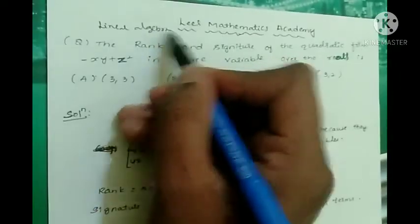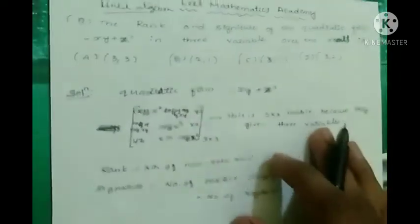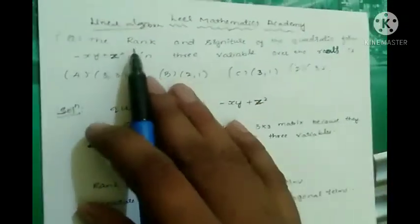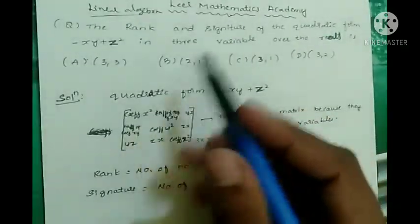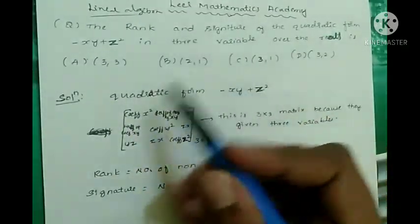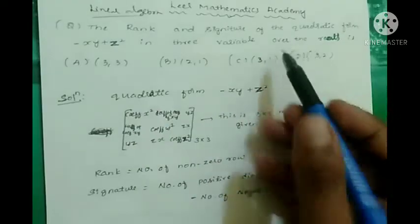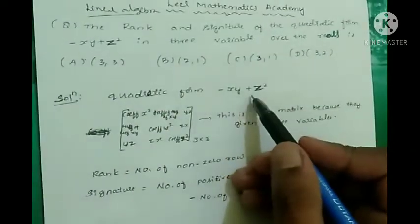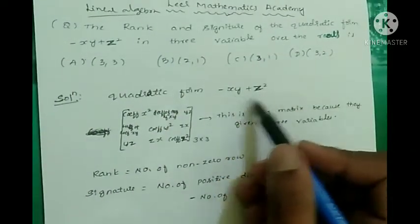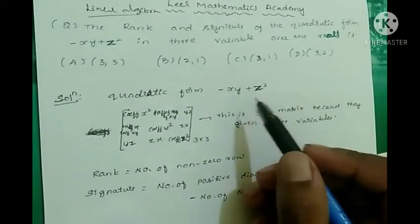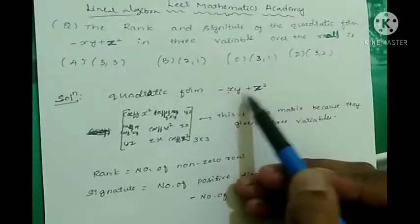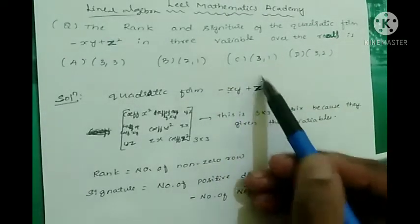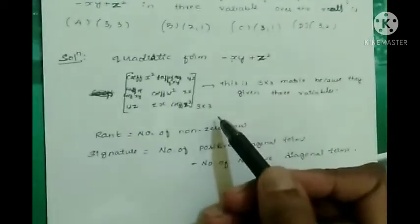I will give the trick to find the rank and signature of the quadratic form. The given quadratic form is minus xy plus z squared. In this quadratic form, three variables are involved: x, y, and z. That is why we consider a three by three matrix.